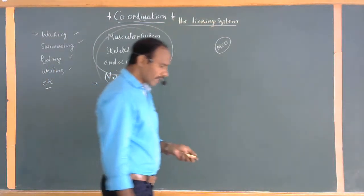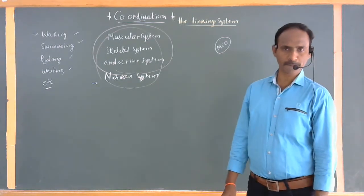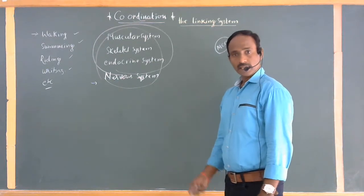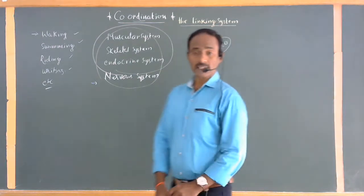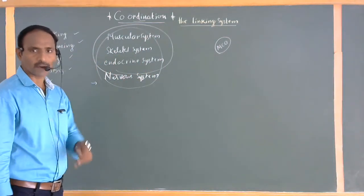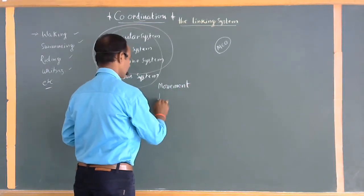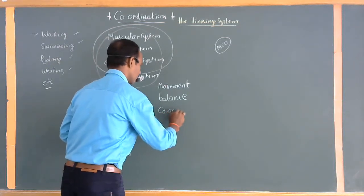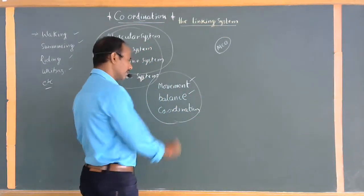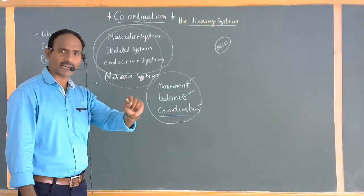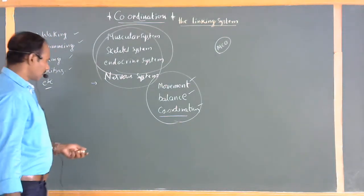For example, when crossing a narrow canal or walking on a narrow base, we must walk in a steady manner. Even a fraction of a second of absent-mindedness can cause us to fall. This is completely managed by coordination. Any physical action we perform involves three elements: movement, balance, and coordination. These three together complete any physical movement.